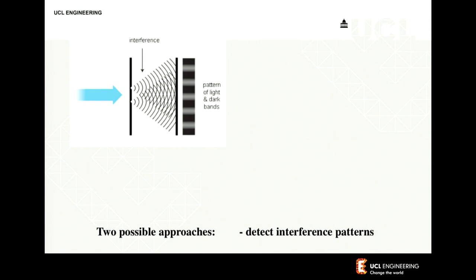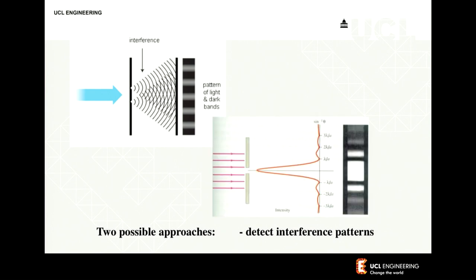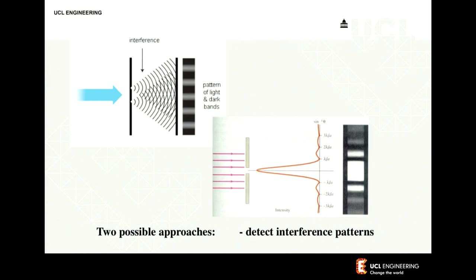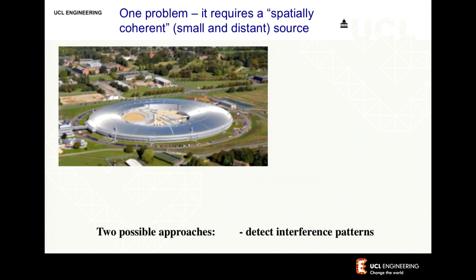Having an object hit by a wavefront is the same as having an aperture in a screen. The important thing is this changing speed. If you want to use interference to create an image, you can do it, but the problem is you need a very special source — something like a synchrotron. This is a particle accelerator that you use not to smash particles against each other, but to generate electromagnetic radiation because you're accelerating particles in a curved trajectory.